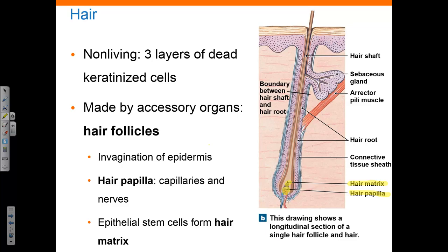The keratinization of the cells begins about halfway up the hair follicle. The portion below this point is known as the hair root and the portion above as the hair shaft. As these cells divide, they are pushed up, forming the hair. When they reach the boundary between the hair root and the hair shaft, they begin to keratinize. The hair shaft then forms and extends above the surface of the skin.